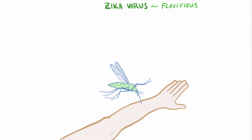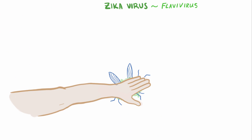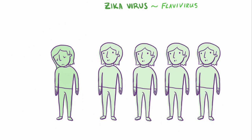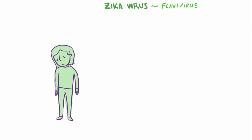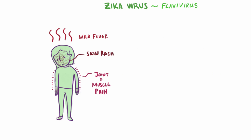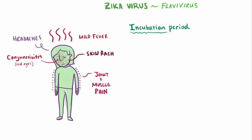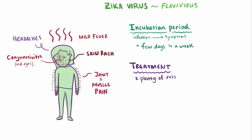As bleak as all that sounds, our immune system is actually pretty good at fighting off Zika virus, and only one in five get sick from infection — often the others won't even notice they've been infected. Common symptoms when patients have them are mild fever and skin rash, but some also experience muscle and joint pain, headaches, and conjunctivitis or red eyes. The incubation period is not known exactly, but is thought to be from a few days to a week. Treatment usually just involves treating the symptoms: getting plenty of rest, drinking fluids to prevent dehydration, and taking medicine like acetaminophen to help reduce pain and fever.